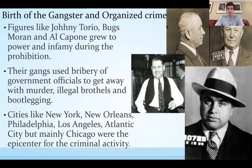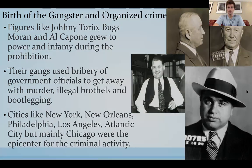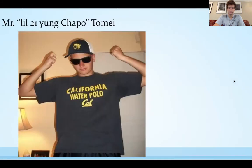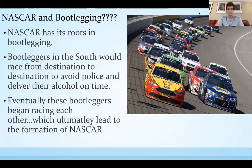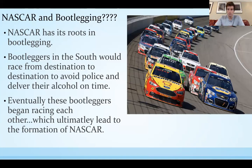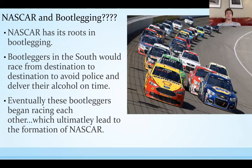Cities like New York, New Orleans, Philadelphia, LA, Atlantic City, and mainly Chicago were kind of the epicenter — the urban centers for criminal activity during this time period. Fun fact for any NASCAR fans: NASCAR actually has its roots in bootlegging. Bootleggers in the South would race from destination to destination to avoid police and deliver alcohol in time. Eventually these bootleggers began racing each other, and this led to the formation of NASCAR. So NASCAR's roots go all the way back to Prohibition — kind of wild.